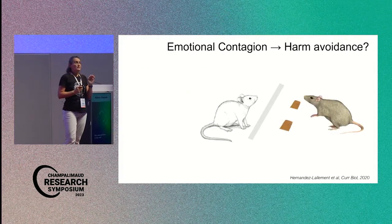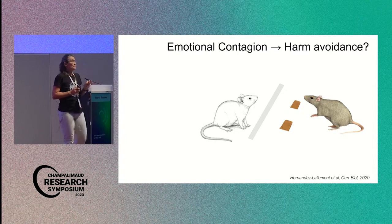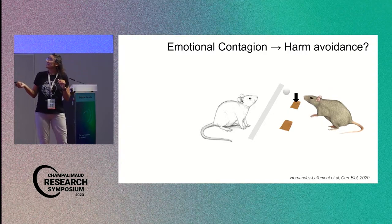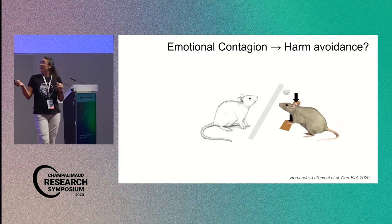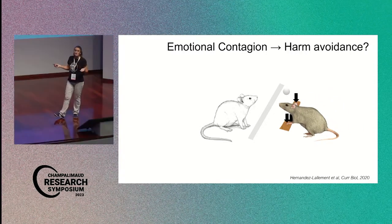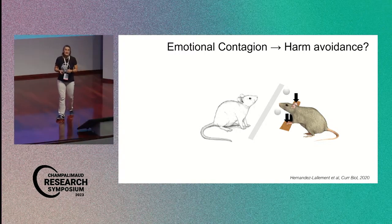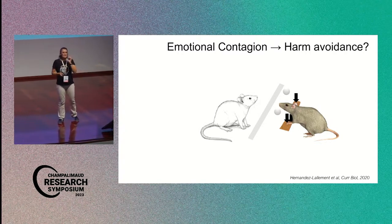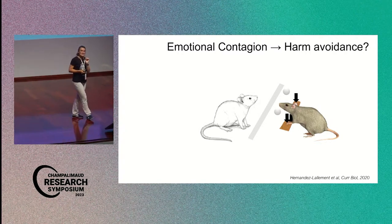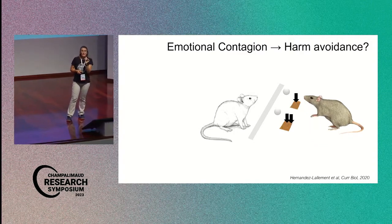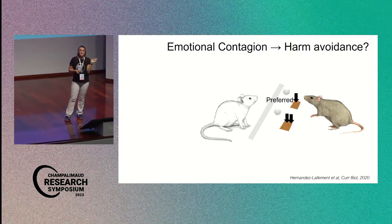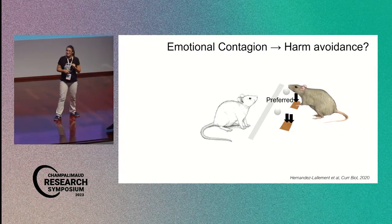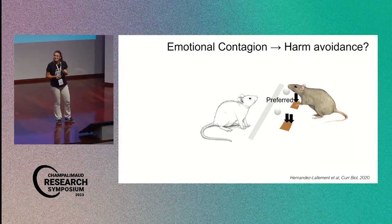So here we taught our rats to press two levers. And the levers give the exact same rewards, but one of them is a little bit easier to press than the other lever. And this means that very soon, the animal will develop a preference for the easy lever, the easy to press lever with equal reward. And now we play a trick. As soon as the animal presses the lever that is its own favorite, we're going to deliver a shock to the conspecific. And then we want to see whether this is sufficient for the animal to switch lever. Is it or not?